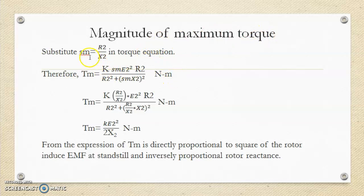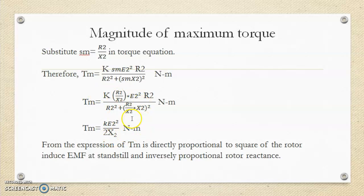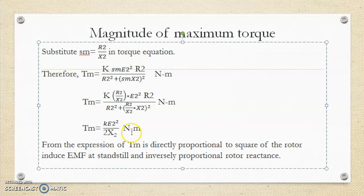Now we find the magnitude of maximum torque. Substitute Sm equals R2/X2 into the torque equation and denote that torque by Tm. So Tm equals K·Sm·E2²·R2 divided by (R2² + (Sm·X2)²). Putting in the value of Sm as R2/X2, the denominator terms cancel out and you get Tm equals K·E2² divided by 2·X2. This is the value of maximum torque obtained when S equals Sm equals R2/X2.